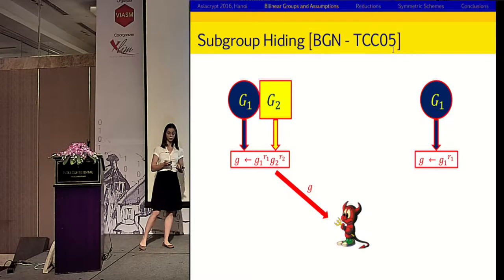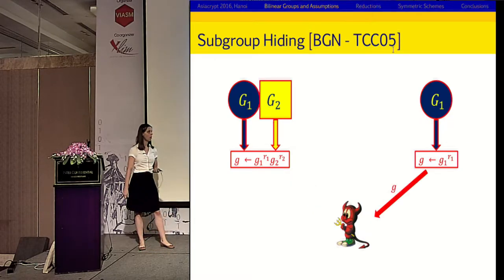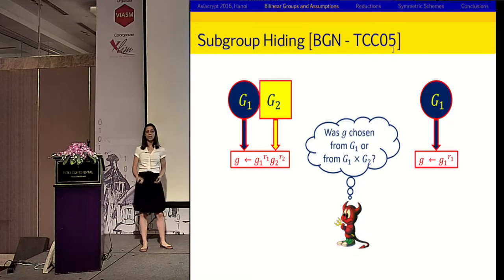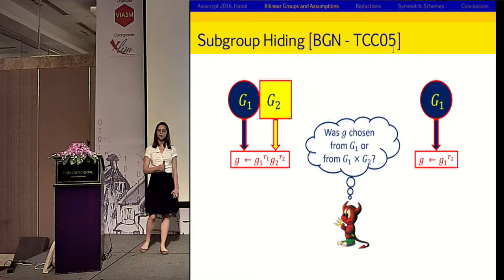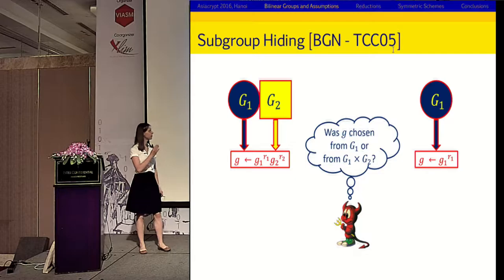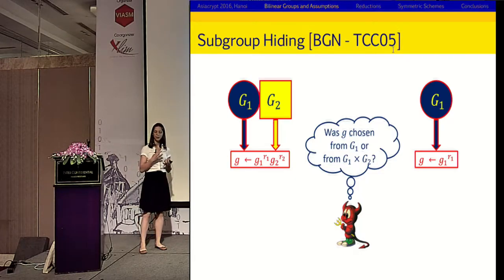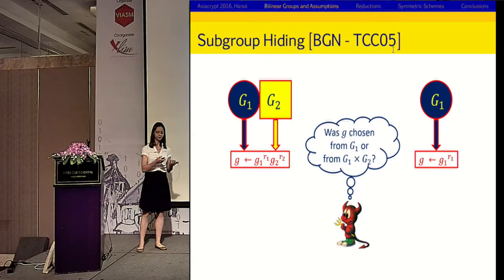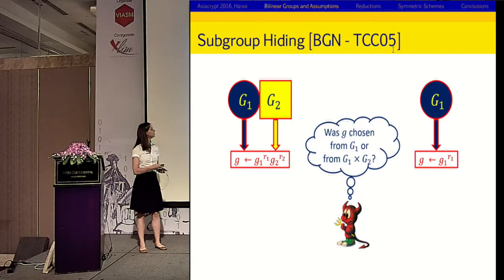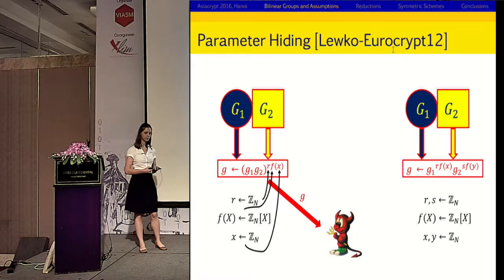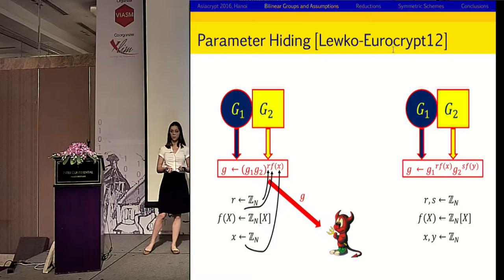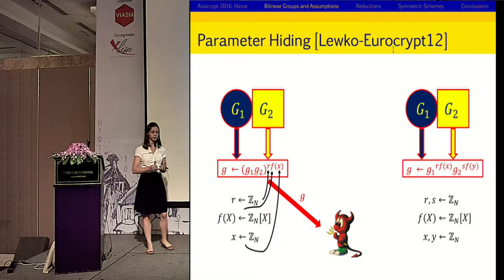In subgroup hiding, we model this as a game that an adversary plays. The adversary is either given an element generated using both subgroup generators, or an element generated using just one subgroup generator. But just by looking at this element, the adversary has no idea which group it's in — it cannot figure it out with better than negligible probability over guessing. If it does, then it wins the game.